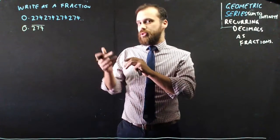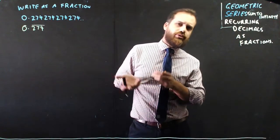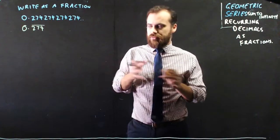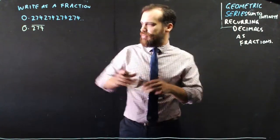Because any recurring decimal can always be written as a fraction. You already know that 0.33333 is one third. Anything that recurs can be written as a fraction.